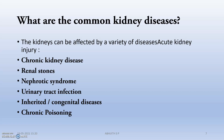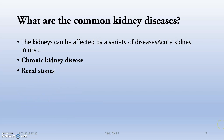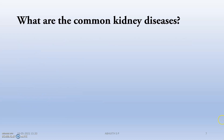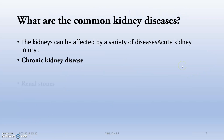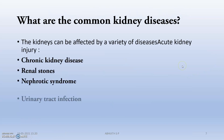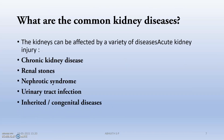When the kidney is damaged, the peritubular capillary endothelial cells will be damaged as well. As a result, they will not be producing much erythropoietin.